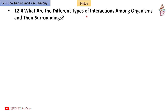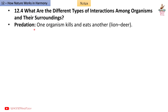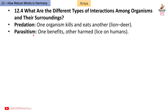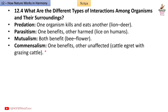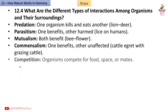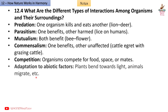12.4: What are the different types of interactions among organisms and their surroundings? Predation: one organism kills and eats another — example: lion and deer. Parasitism: one benefits, other is harmed — example: roundworms on humans. Mutualism: both benefit — example: bee and flower. Commensalism: one benefits, other is unaffected — example: cattle egret with grazing cattle. Competition: organisms compete for food, space, or mates. Adaptation to abiotic factors: plants bend towards light, animals migrate.